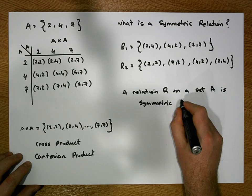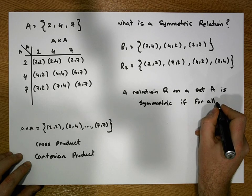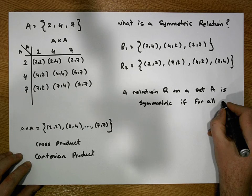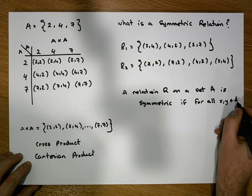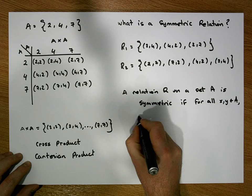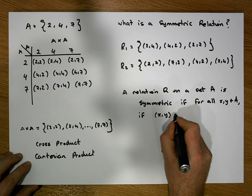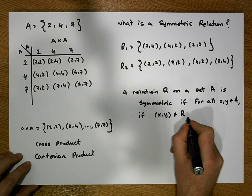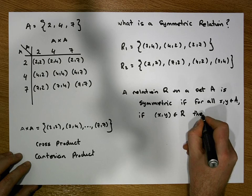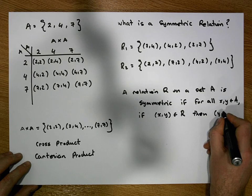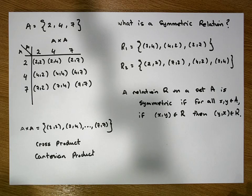It is symmetric if, for all x and y that are elements of A, if the ordered pair (x, y) is an element of the relation, then we need to have (y, x) also being an element of the relation.